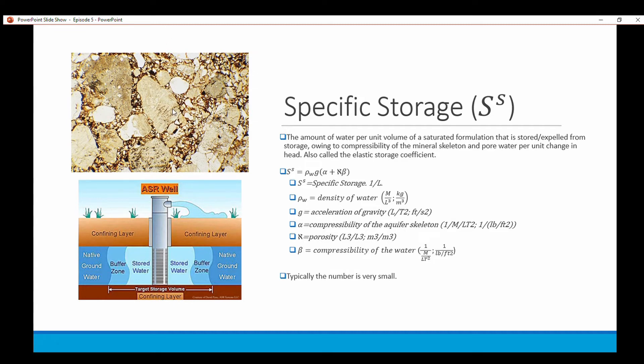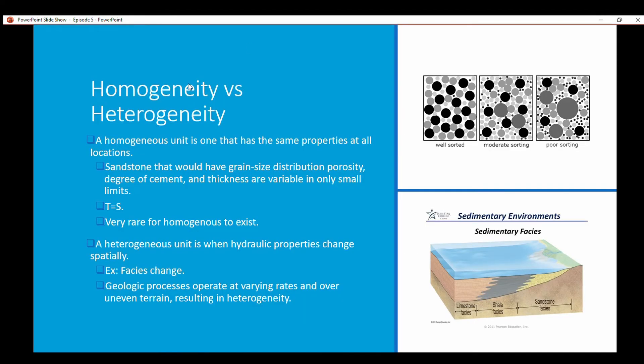Homogeneity versus heterogeneity. A homogeneous unit is one that has the same properties at all locations. For example, a sandstone that would have grain size distribution, porosity, the same degree of cement and thickness which are only variable in small amounts.